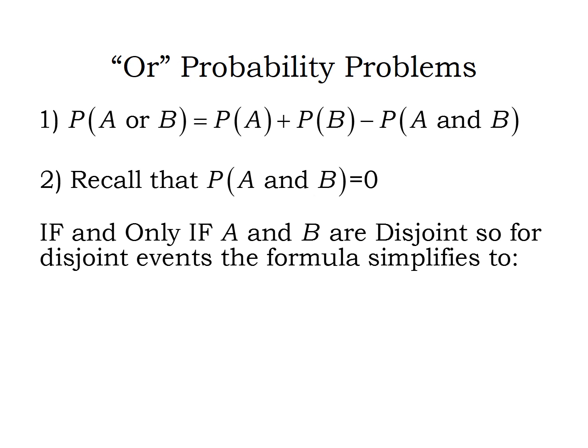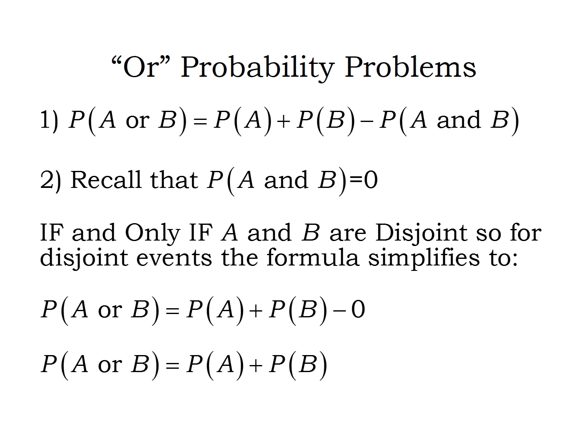The probability of A and B will be zero if and only if the events are disjoint — meaning if A happens, B can't happen, and if B happens, A can't happen. No event can belong to both A and B. In that case, the last term is just minus zero, so for disjoint events, the OR probability is simply the sum of the individual probabilities.